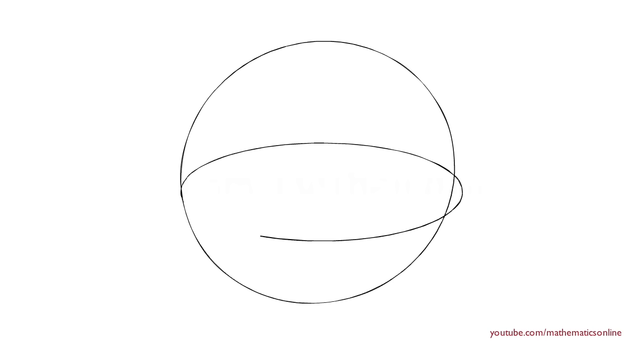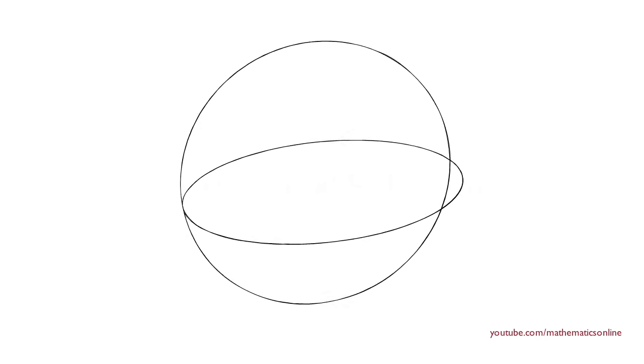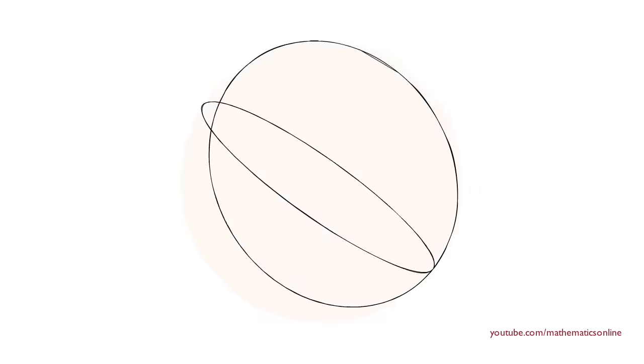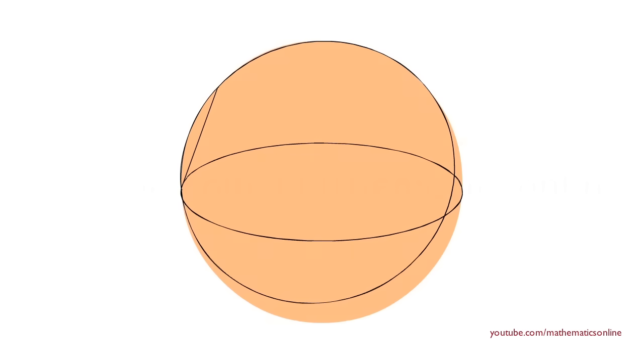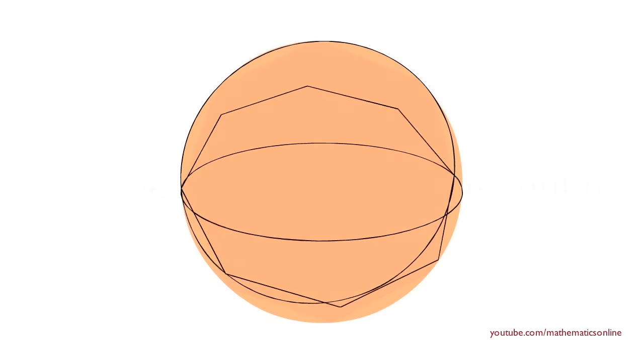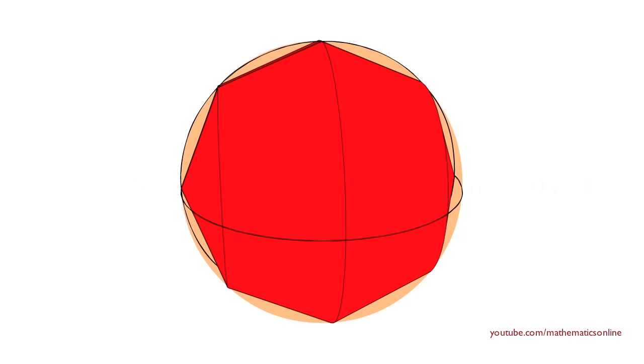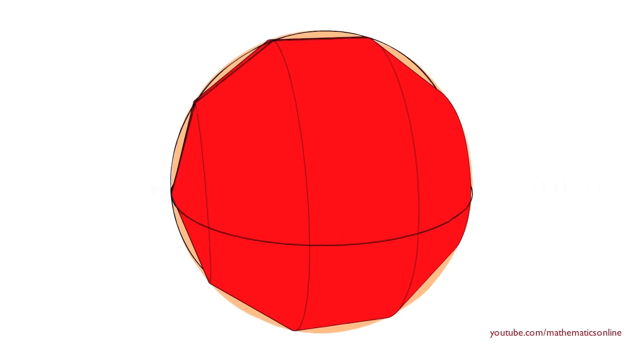First we'll create a sphere and fill in its surface area. Next we inscribe a polygon inside the sphere, and we rotate the polygon along its horizontal axis to create a 3D model. Now if we increase the number of sides of the inscribed polygon, we can see how this affects the shape of the model.